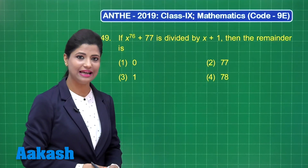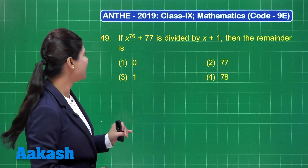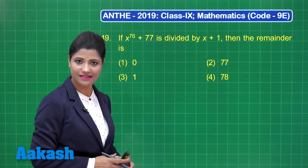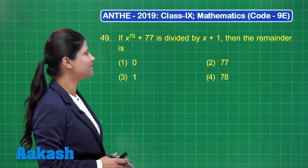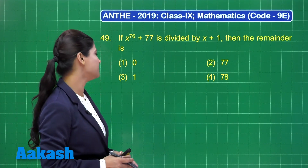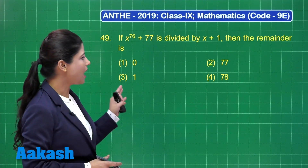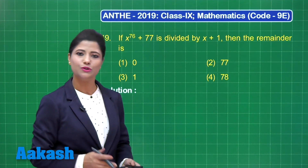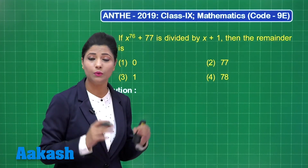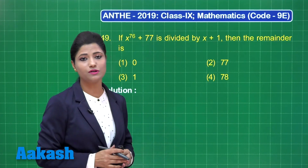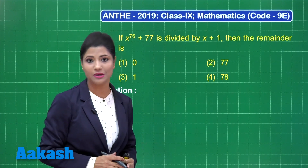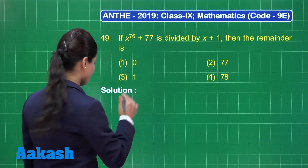Let's proceed to question number 49. It states that if x raised to the power 76 plus 77 is divided by x plus 1, then the remainder is — out of these four options. You know how to find the remainder: you can use the long division method, or else the best way is using the remainder theorem.